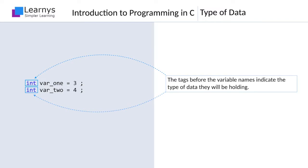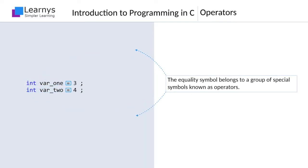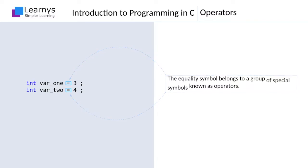This is one of the many data types we will look through in later videos. The equality sign plays a special role in C programming. This symbol belongs to a group of special symbols known as operators. Operators are instructions in the form of special symbols which instruct the computer to perform a very specific task. The equality symbol, also known as assignment operator, assigns the value on its right-hand side to the variable on its left-hand side.